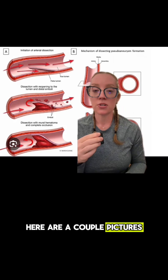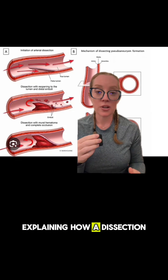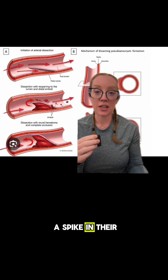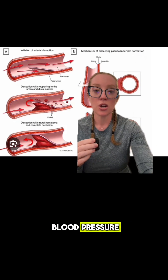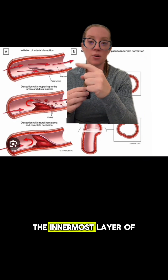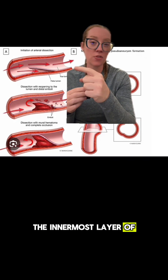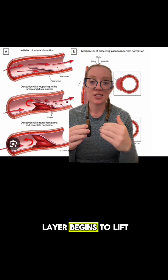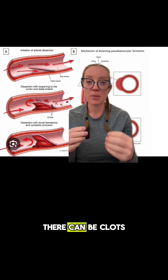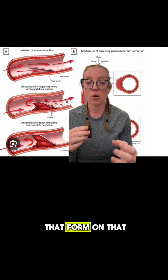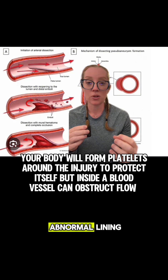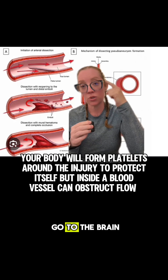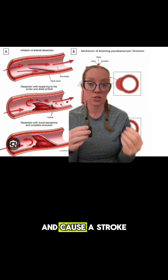Here are a couple of pictures explaining how a dissection may happen. If a patient has a spike in their blood pressure, it can begin to lift off the innermost layer of the wall. As you can see in this picture, if the layer begins to lift, there can be clots that form on that abnormal lining, and those clots can then break off and go to the brain and cause a stroke.